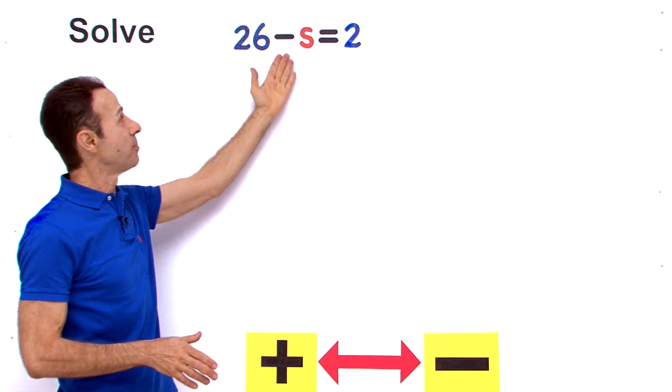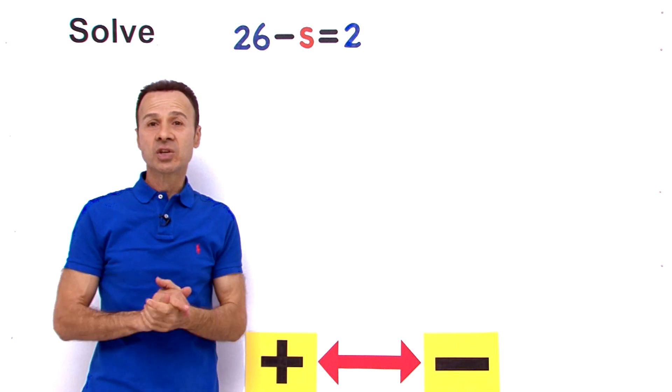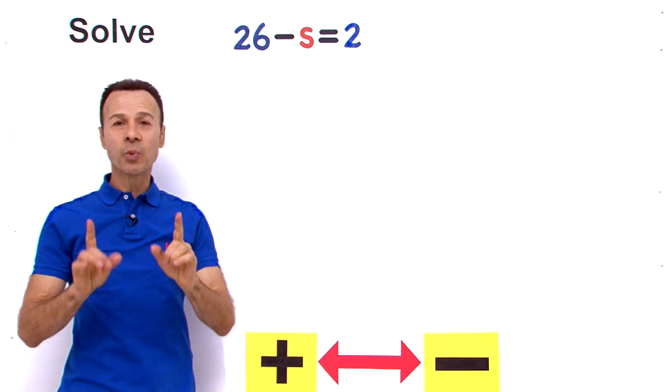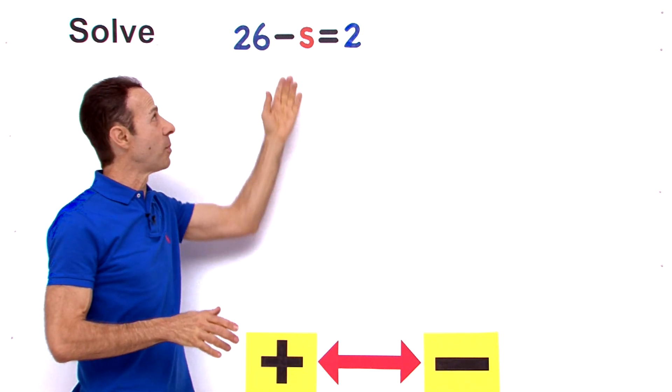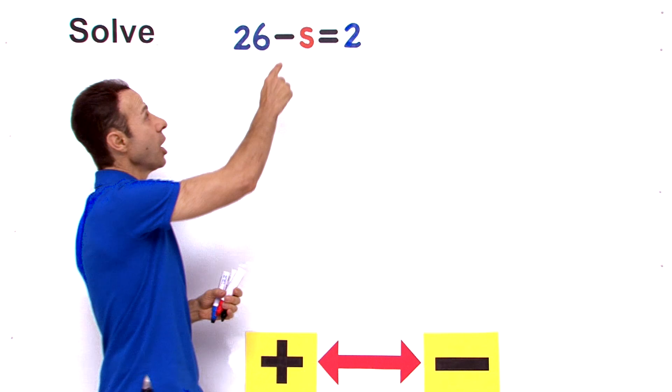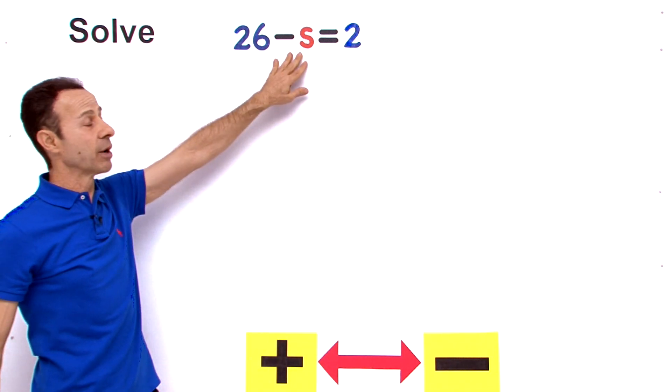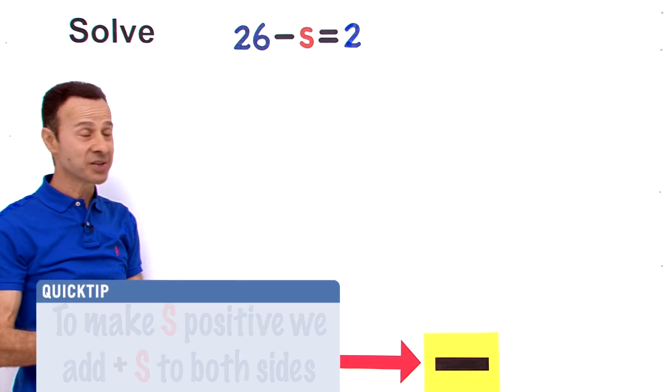It's 26 minus s, we've got a minus in front of the s. So we don't want to get a minus variable so we need to make it a plus. So what we need to do is do the opposite of minus s in order to make it plus again. So the opposite of minus s is plus. So I want to get rid of that minus s and turn it into a plus s.